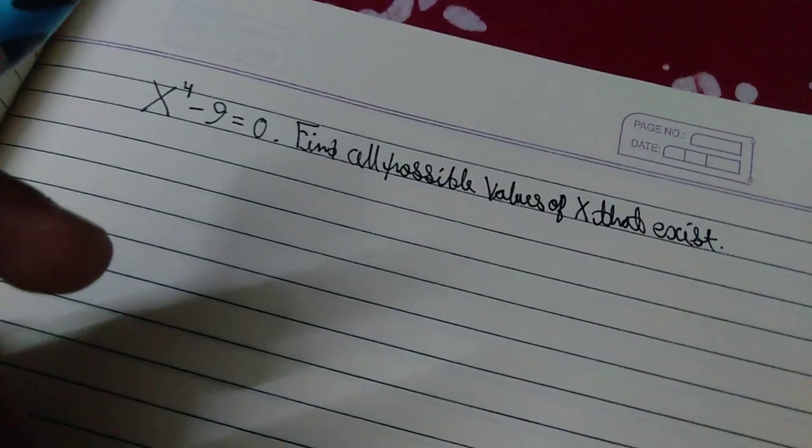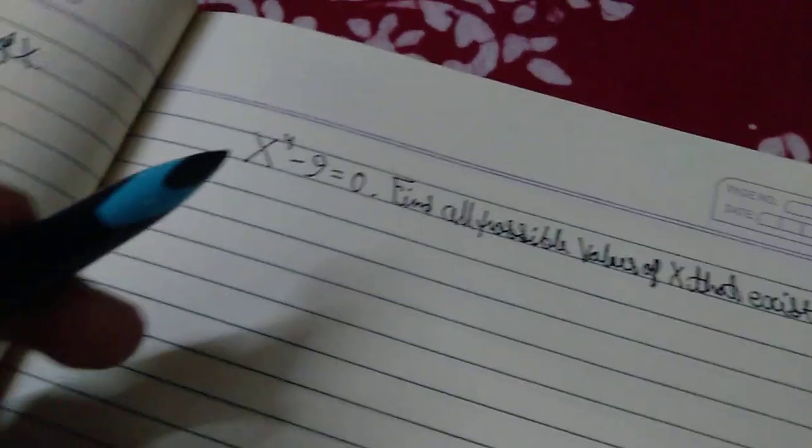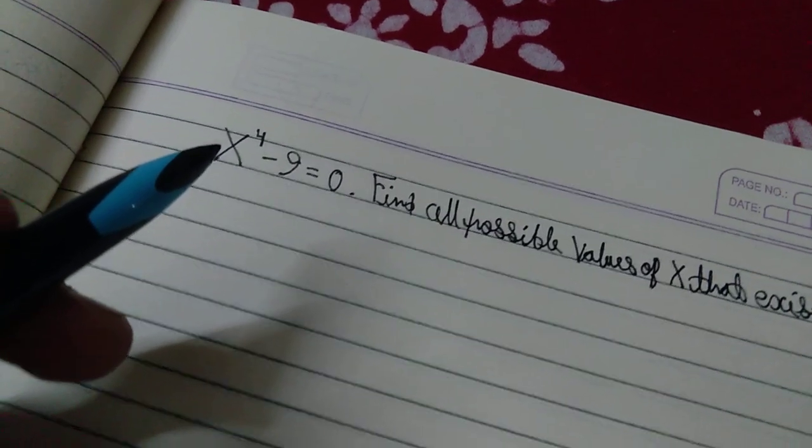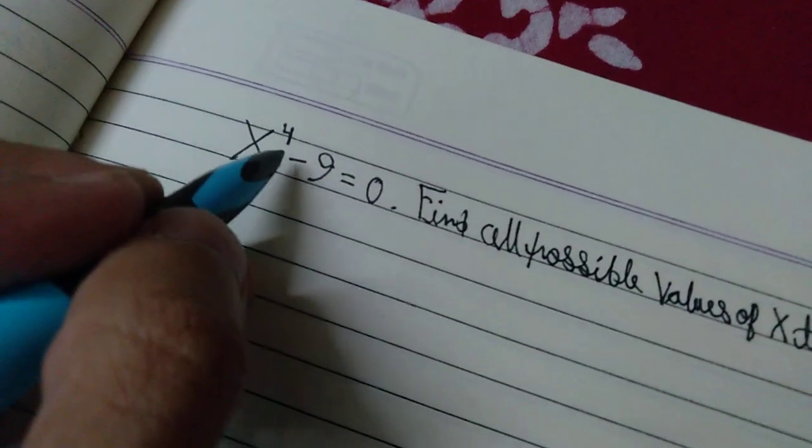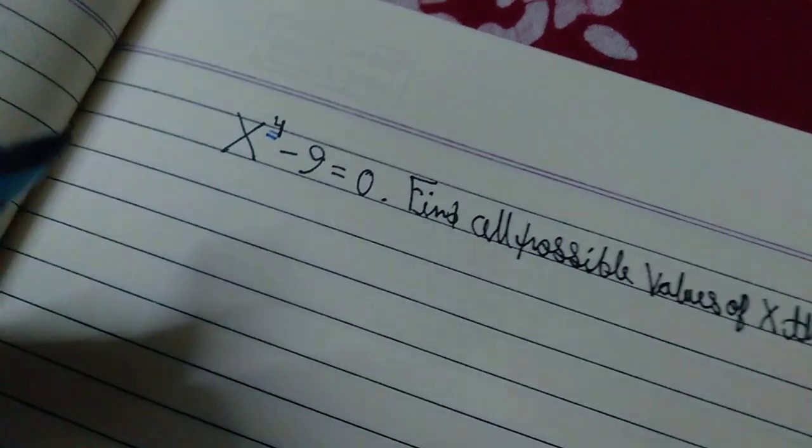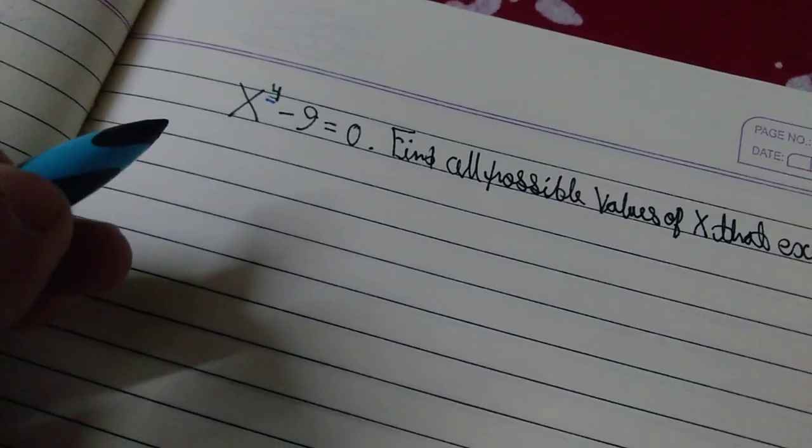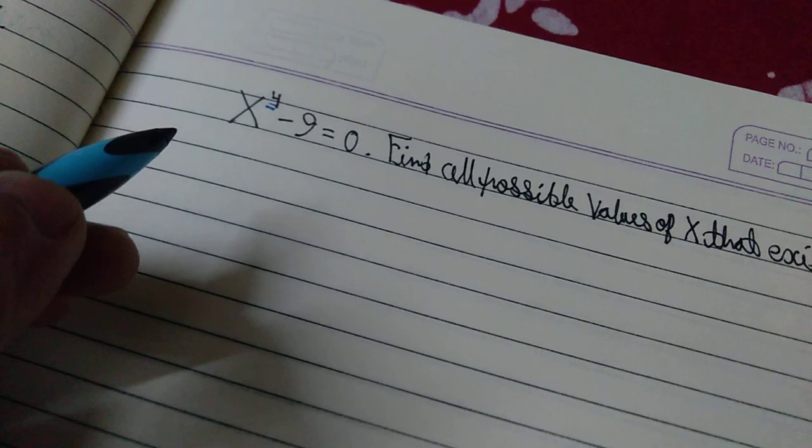to find all the possible values of x that exist. Now some things to take note of here is that the degree of this equation is 4, which means this equation will have at most 4 possible solutions.